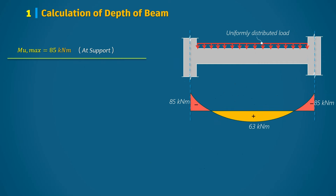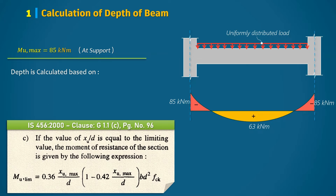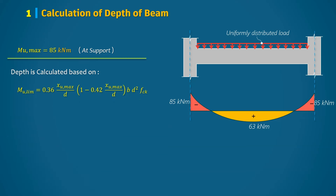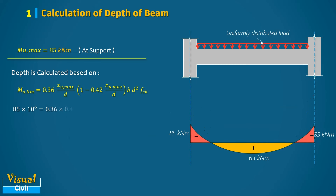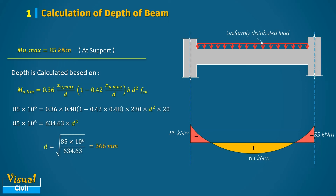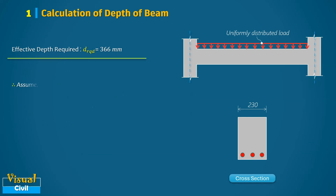The depth of the beam will be calculated for the balanced section using the equation provided in Clause G-1.1(c). In this equation, Mu,lim is replaced by the maximum bending moment, and the value of Xu,max/d is taken from Clause 38.1 for Fe415 steel. After putting all required values and solving, the required effective depth equals 366 mm. We assume a total depth of the beam of 450 mm.